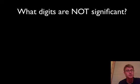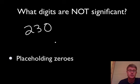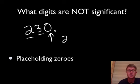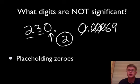What is not significant? Only one group: placeholder zeros. For example, in 230, the 2 and 3 are significant, but the zero is just spacing them from the decimal place — it's a placeholder and not significant, so 230 has only 2 significant digits. Similarly, 0.000069 has all leading zeros as placeholders, so there are only 2 significant digits.